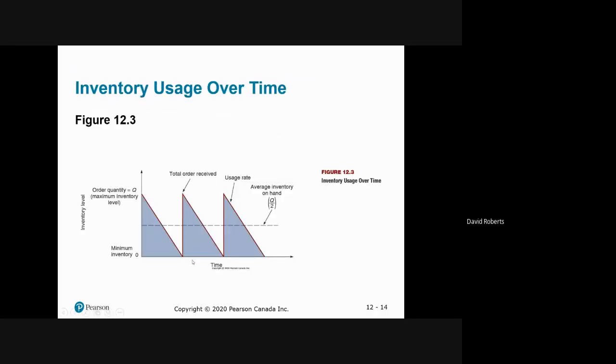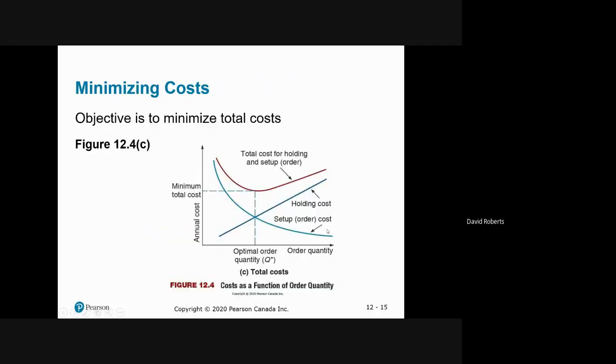As you can see, this is represented graphically. The average inventory is half the distance between the peak and the minimum, which is simply Q, because the minimum is zero, simply Q divided by two.